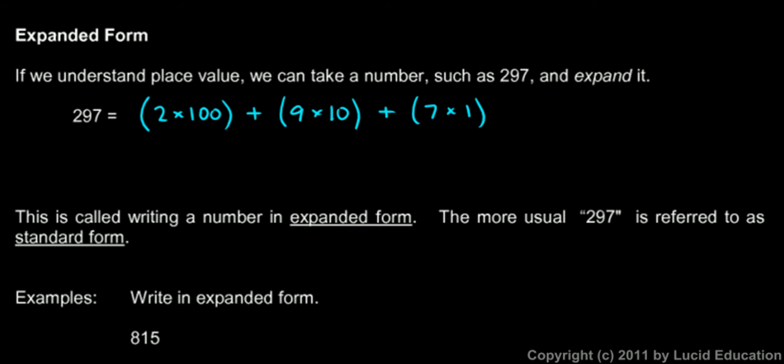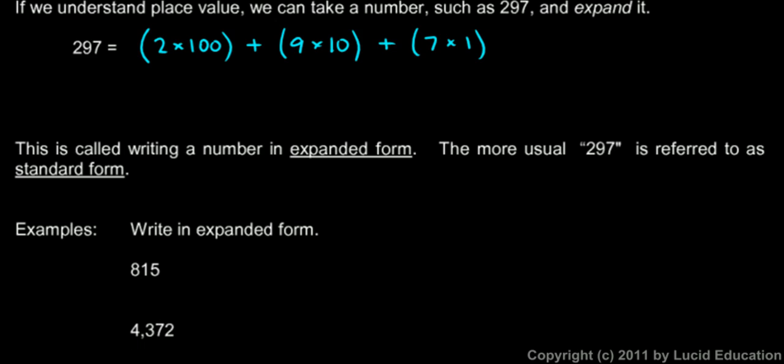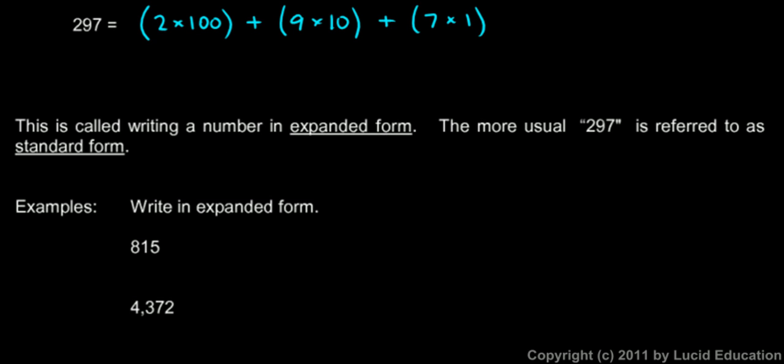Write these numbers in expanded form that you see next in the notes: 815 and 4,372. And then in the next video we'll look at the solution. So go ahead and try those two on your own, 815 and 4,372, and then make sure you get the correct answer.